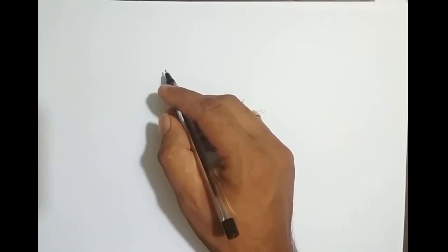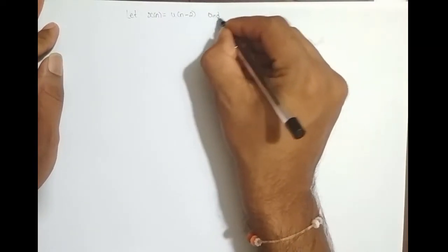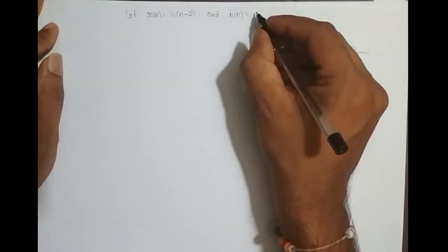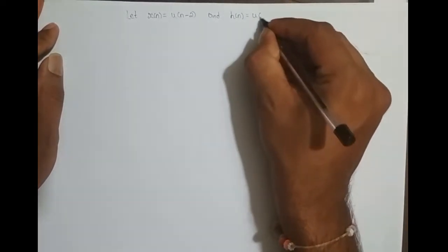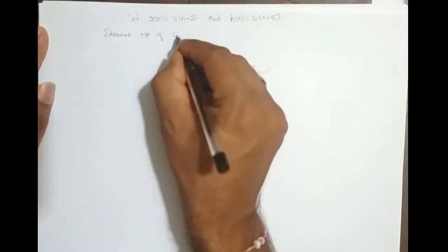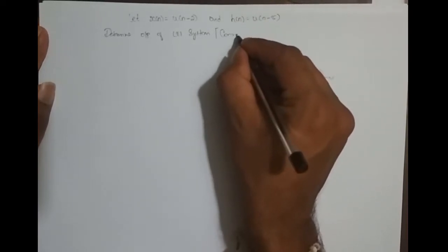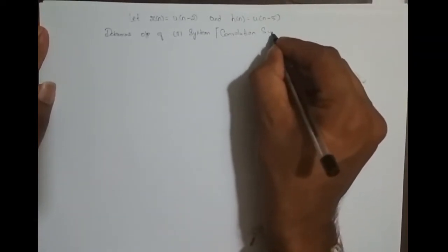Hi guys, we will take up one more problem on convolution sum of an infinite length sequence. Let the input signal x(n) = u(n-2), which is a unit step function shifted right 2 times, and impulse response h(n) = u(n-5). Determine the output of the LTI system, also called the convolution sum.